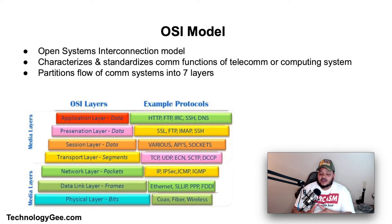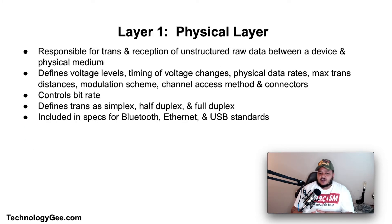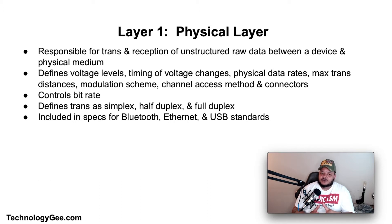Layer one is the Physical Layer. The physical layer is responsible for the transmission and reception of unstructured raw data between the device and the physical transmission medium. It converts the digital bits into electrical, radio, or optical signals. Layer specifications define characteristics such as voltage levels, the timing of voltage changes, physical data rates, maximum transmission distances, modulation scheme, channel access method, and physical connectors.